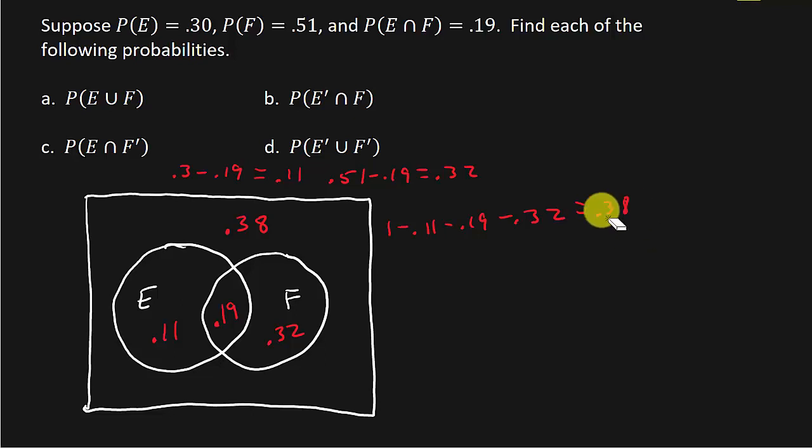All right. So let me erase this so we'll have some room. All right. So let's answer part A. So part A wants to know the probability of E union F. All right. So the probability of E union F. So there's different ways you can go about it.